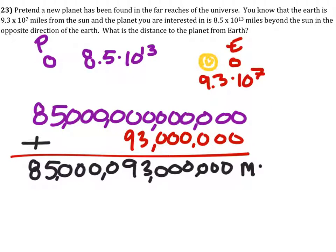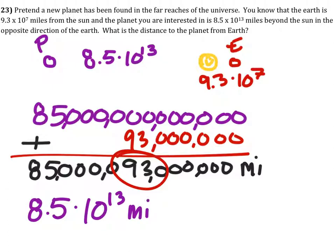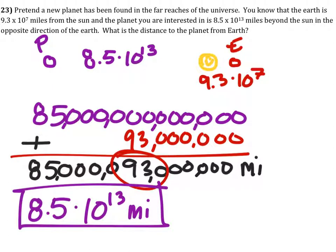So, this is how many miles in standard form they are away from the Earth, from each other, from the planet. Unfortunately, this 93 is highly insignificant in this value. So, we would write it as 8.5 times 10 to the power of 13 miles away from each other. This 93 is insignificant, so we do not include it in the answer.